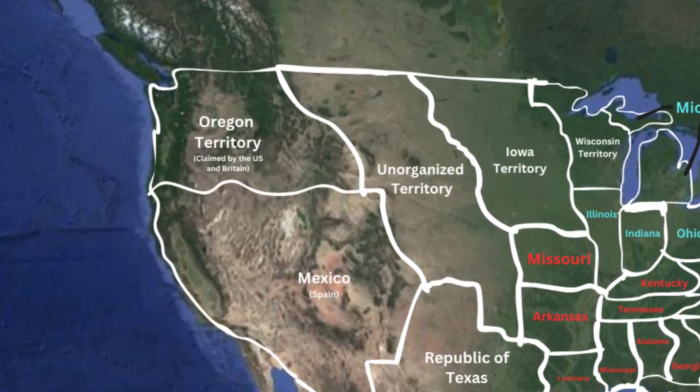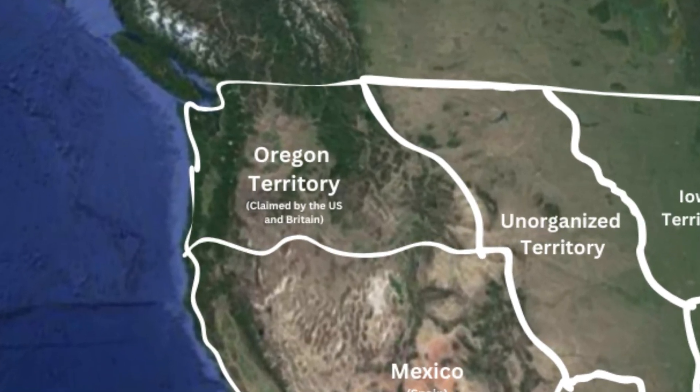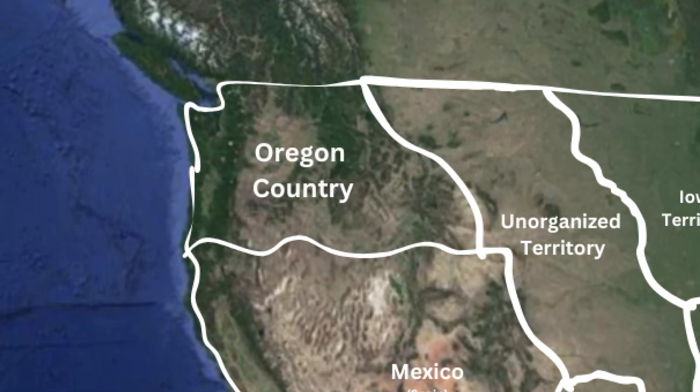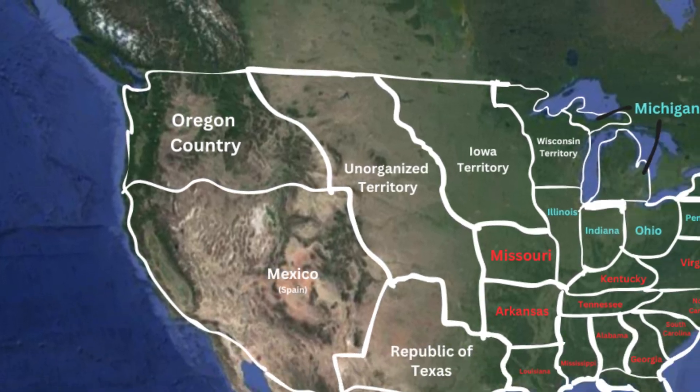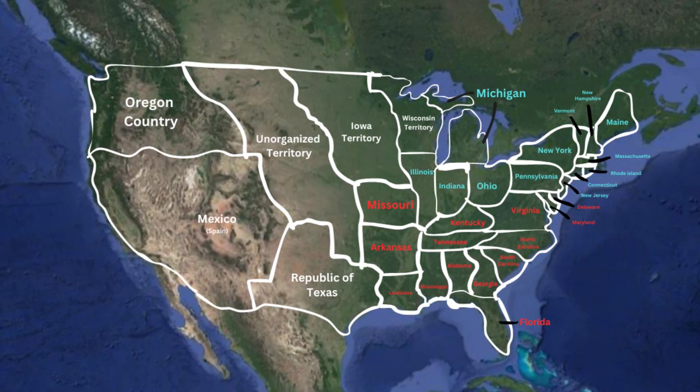He started by negotiating with Britain to secure Oregon up to the 49th parallel. This would avoid war while expanding the US northwest.